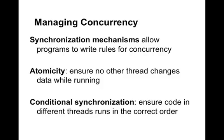So how do we manage concurrency? Computer scientists have developed two main techniques over the past 50 years. The first is synchronization mechanisms for atomicity — ensuring that while one thread modifies data, no other threads can change it, like locking the bathroom door. The second is conditional synchronization, which allows code in different threads to run in the correct order — for example, making a withdraw thread wait until the bank balance is high enough before proceeding.